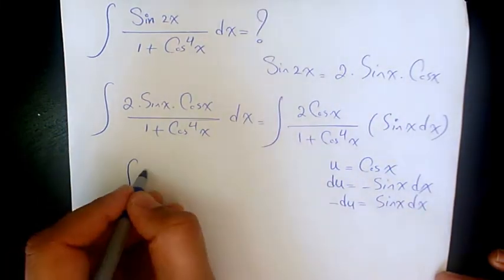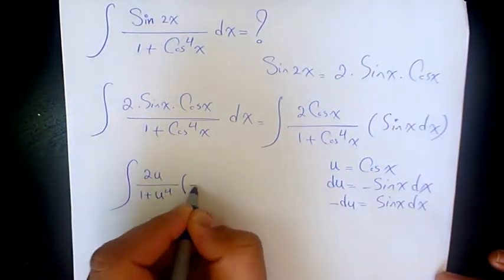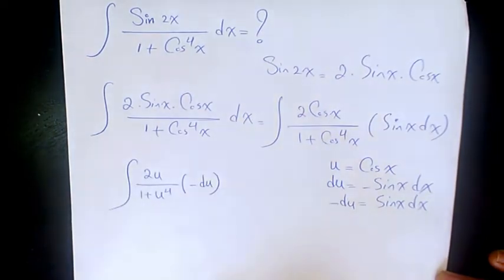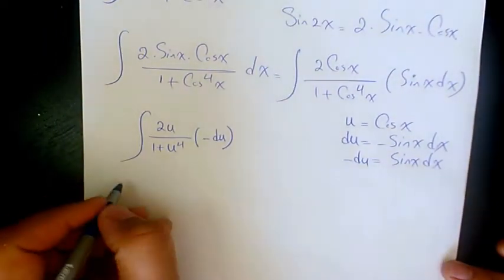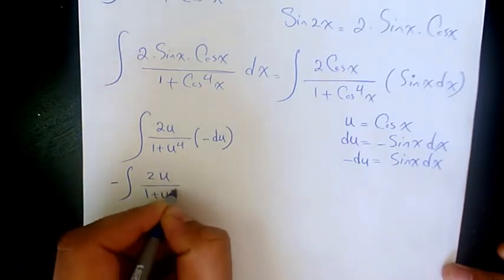So we have 2u over 1 plus u to the power of 4, negative du. Then it's going to be negative 2u over 1 plus u to the power of 4, du.